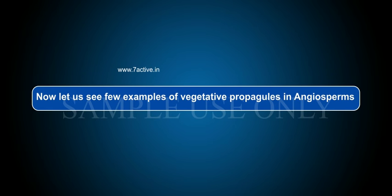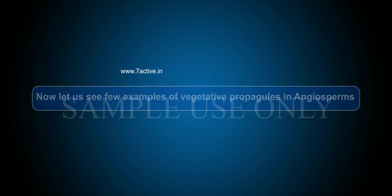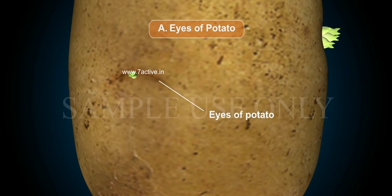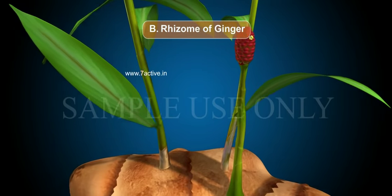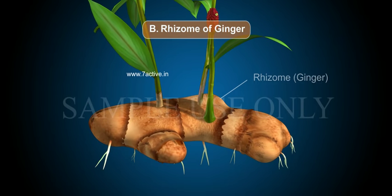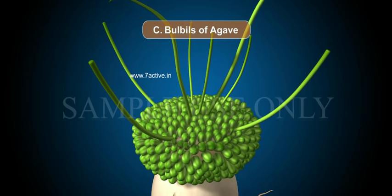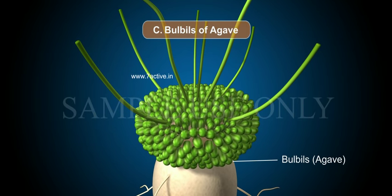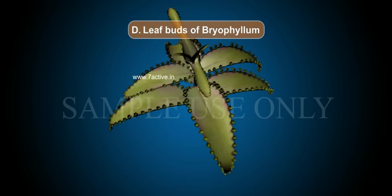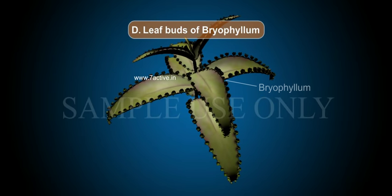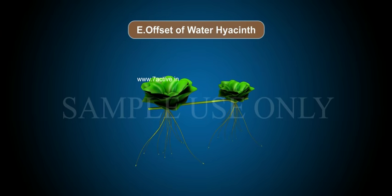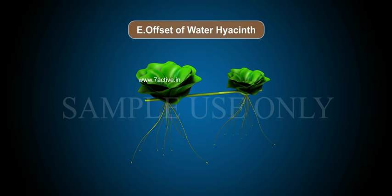Now let us see a few examples of vegetative propagules in angiosperms — leaf buds of Bryophyllum and offset of water hyacinth.